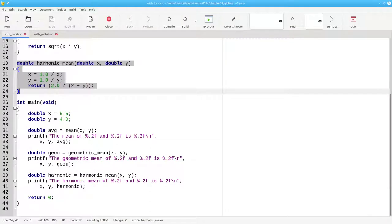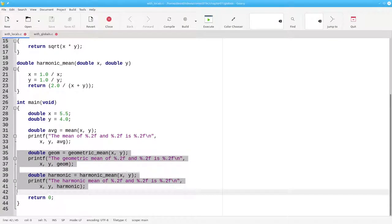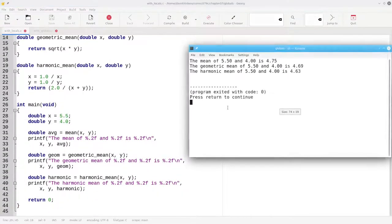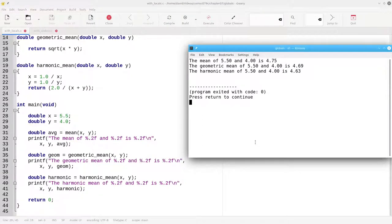The main program sets two variables, calculates the average, and prints the numbers and the average for all three of the functions. When we run it, it works exactly as intended.